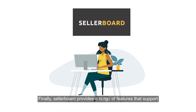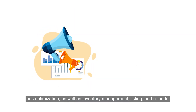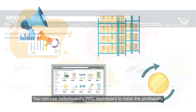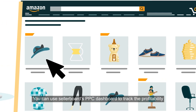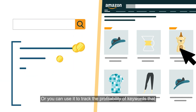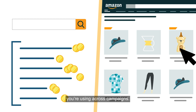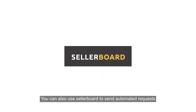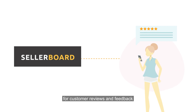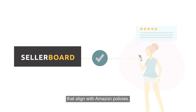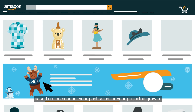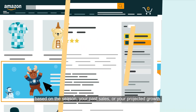Finally, Seller Board provides a range of features that support ads optimization, as well as inventory management, listing, and refunds. You can use Seller Board's PPC dashboard to track the profitability of an Amazon ads campaign, or to track the profitability of keywords you're using across campaigns. You can also use Seller Board to send automated requests for customer reviews and feedback that align with Amazon policies, or to get alerts about inventory that might run out of stock based on the season, your past sales, or your projected growth.